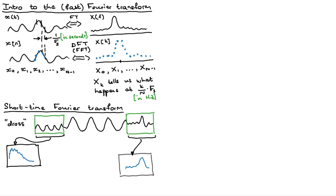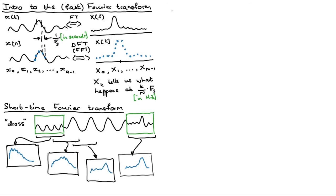What we do in the middle is slide this window across. So instead of taking that first window, we move it 10 milliseconds in. We take a window there and take the DFT of that window — maybe the frequency content has changed a little bit. Then you take the DFT of the next window. The idea is that you sweep this window across from beginning to end and take these little snapshots of DFTs.